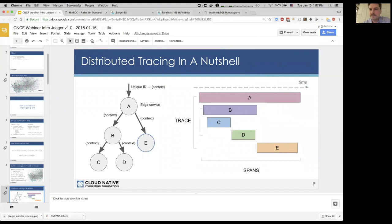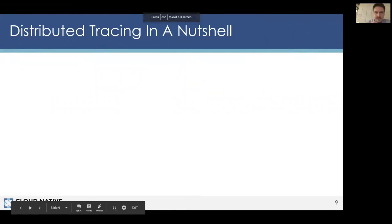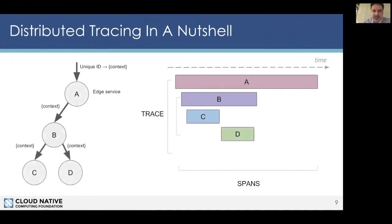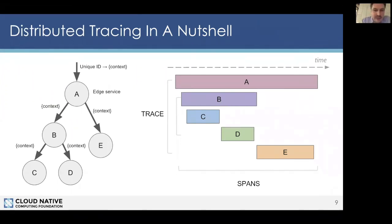As the request traverses our architecture and multiple services, we keep passing the context around, which contains the unique trace ID. We keep building the time sequence diagram, which also captures the causality of individual requests — specifically which call to a service came from which other service, and in what order. So we can build this understanding of what happened within the request. That's the basic idea of distributed tracing. It's not very difficult to implement and has been around for quite a while, but hasn't caught on until recently.